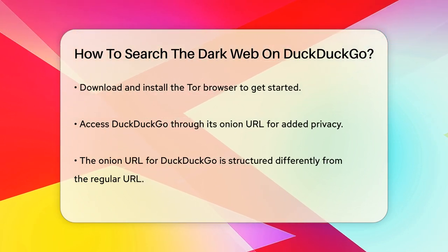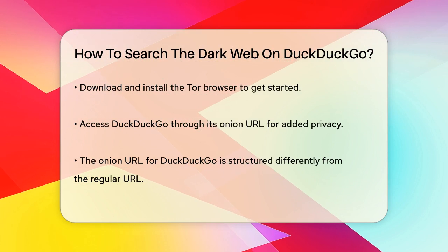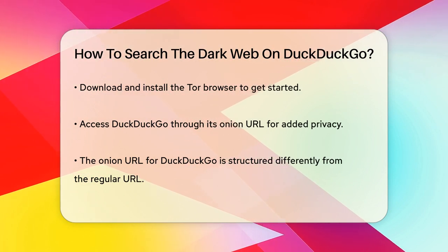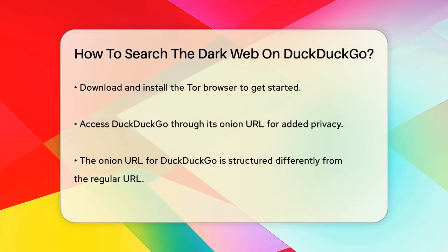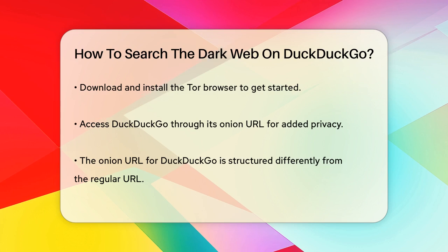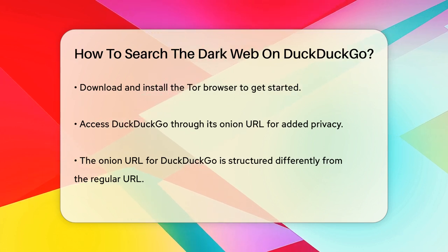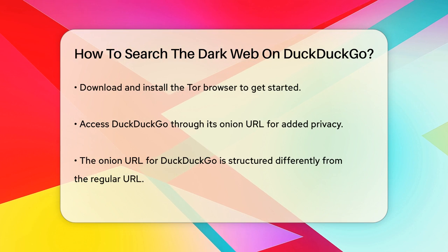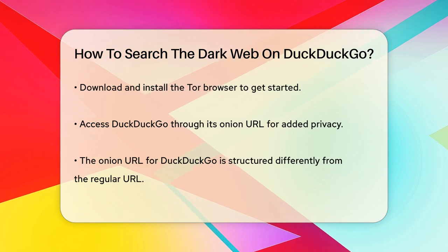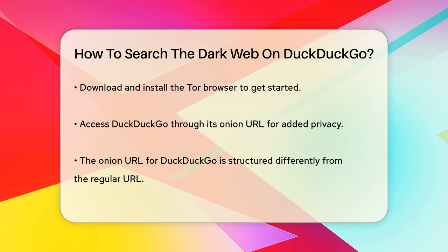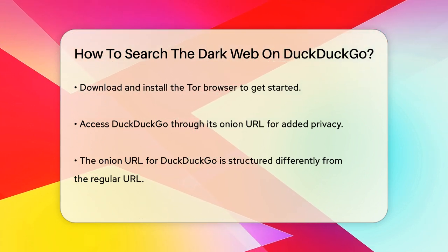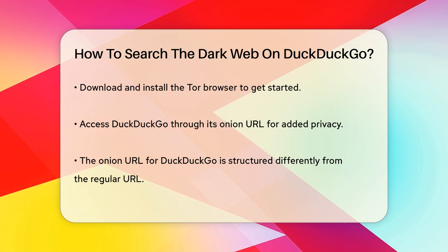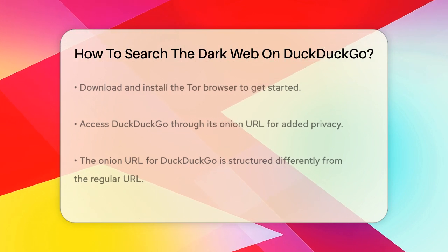Once you have the Tor browser, you can access DuckDuckGo through its Onion URL. This URL looks something like duckduckduck42xjjo72x3sjsoorfbcmvfmft62xwzd.onion. This version of DuckDuckGo operates just like the Surface Web version, but with the added privacy and security of the Tor network.